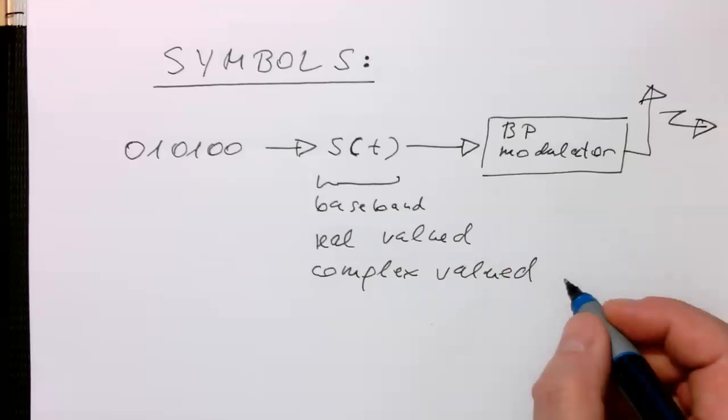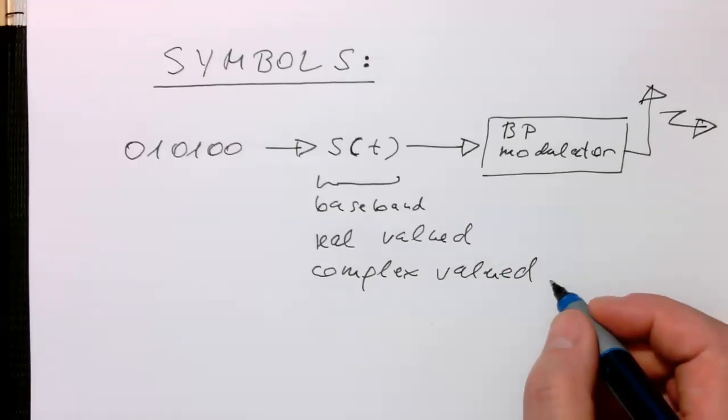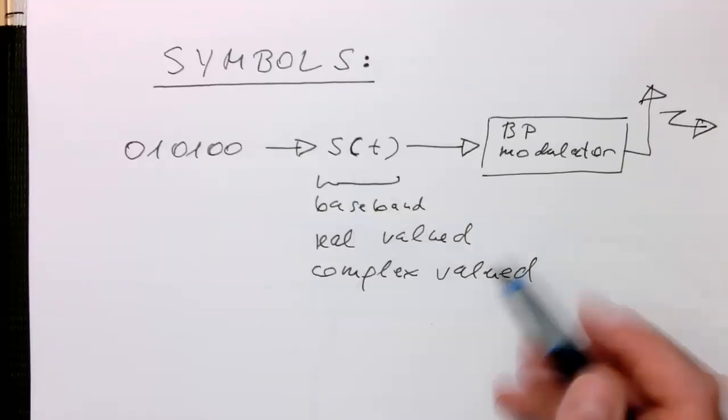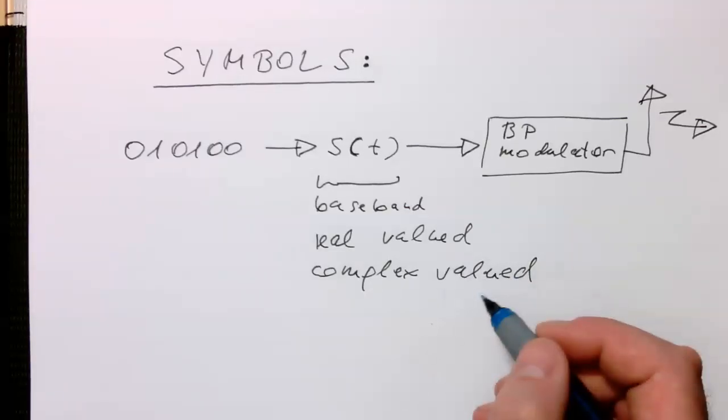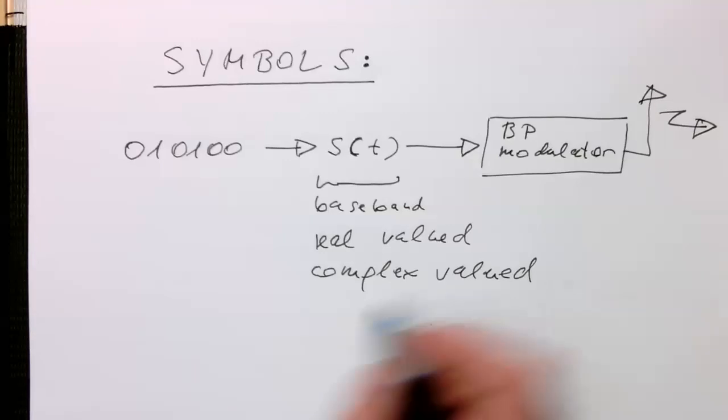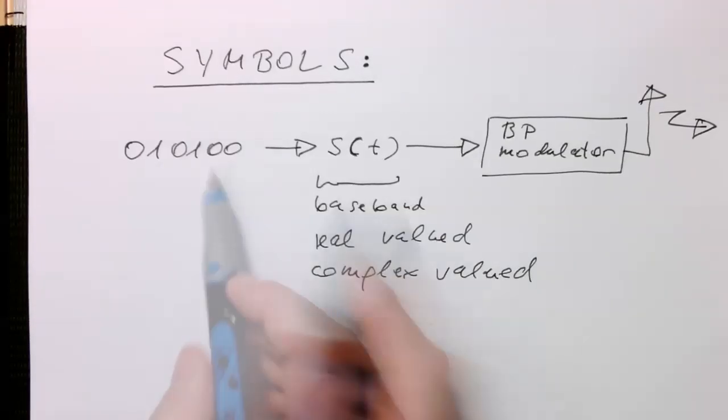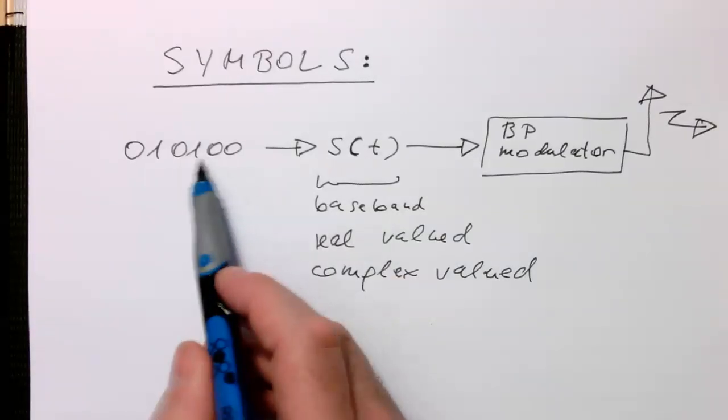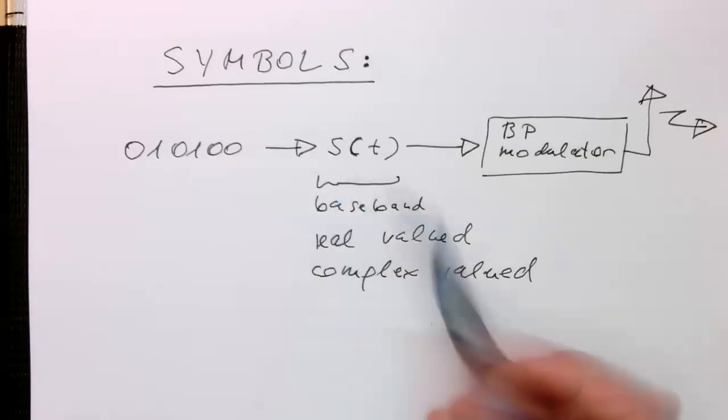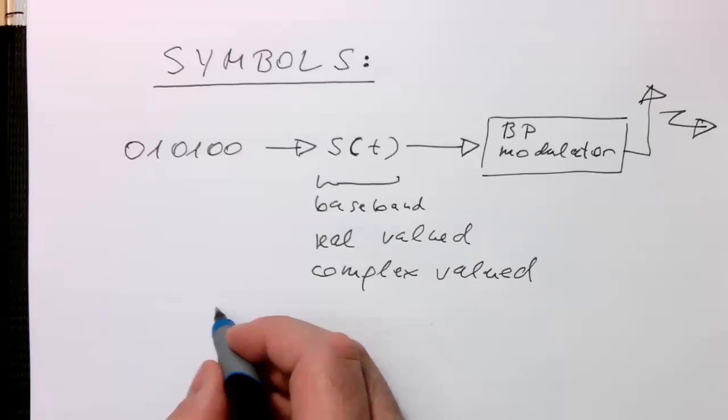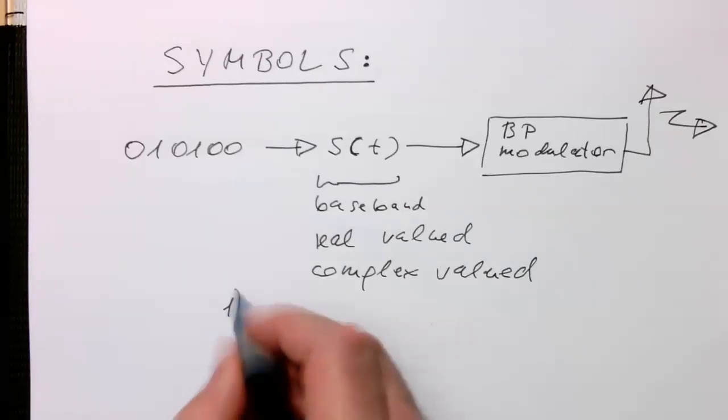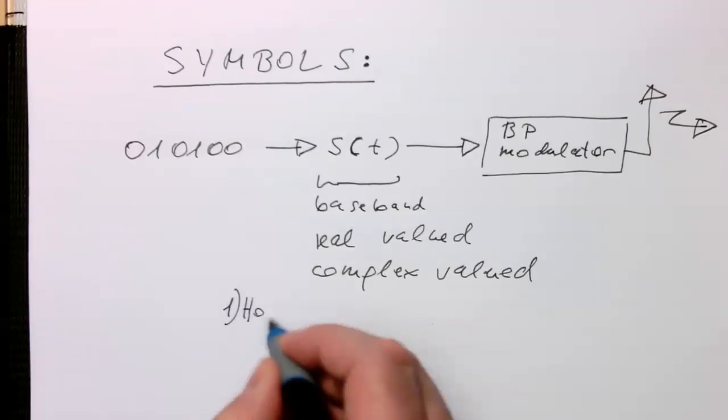So we need to talk about this s(t), and there are two aspects we need to talk about here. The one is actually how do we code this binary sequence into our symbols. So there are two questions we need to address.